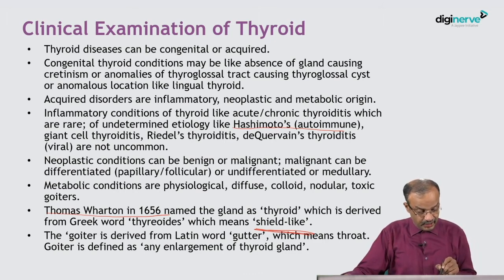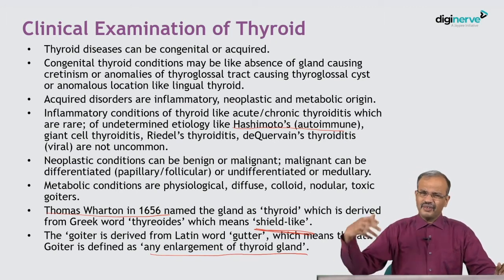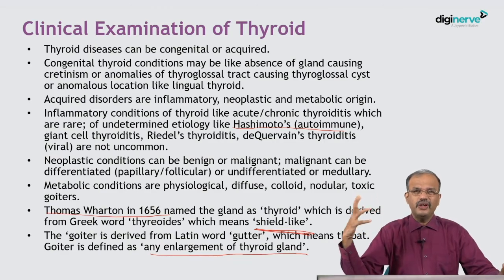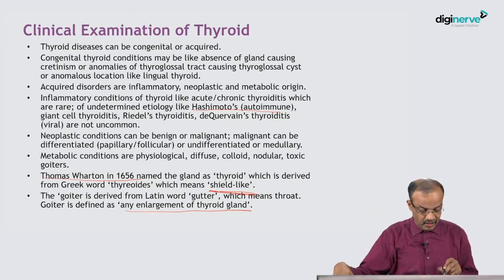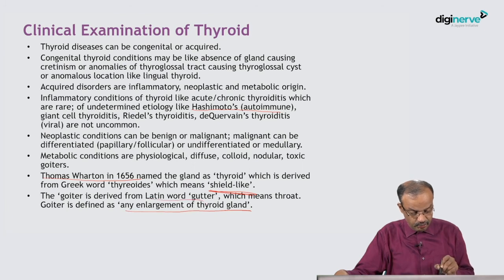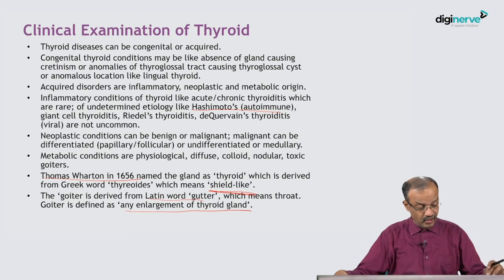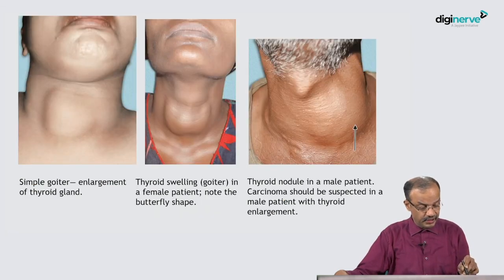Goiter is derived from the Latin word 'gutter' which means throat. Goiter is defined as any enlargement of the thyroid — it is a very gross terminology. It doesn't define the cause; the pathology may be colloid, malignancy, toxic thyroid, nodules, multinodular goiter — whatever the cause, any enlargement of the thyroid is called a goiter. It is the pathological term, as opposed to the normal thyroid.